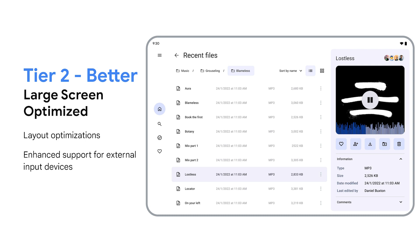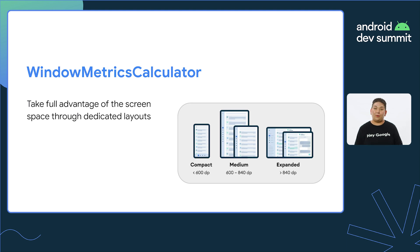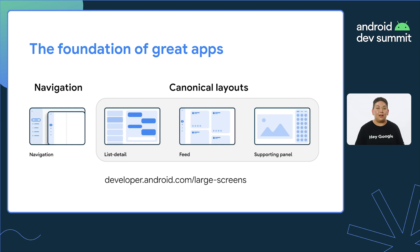For user experiences, we recommend all apps hit at least large screen tier two, where you provide an optimal UX for your app on all display sizes and types. The biggest area of improvement we see for most apps in tier two is around UI and layout. It's one thing to take your existing phone UI and blow it up to work in landscape, tablet, or foldables, but it's way better to provide a display-specific layout. We've also been working on design-specific resources — take a look at the material canonical layouts design guidance to see the most common types of app layouts and how they expand well to all display sizes.